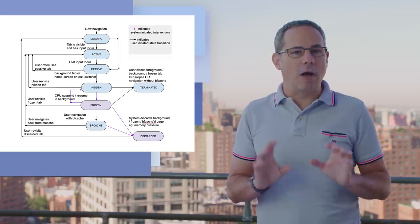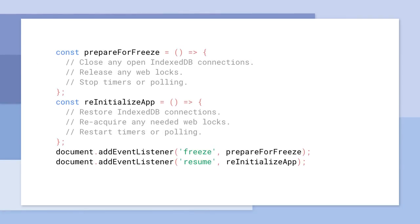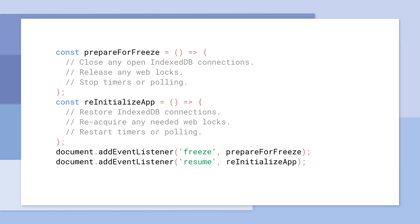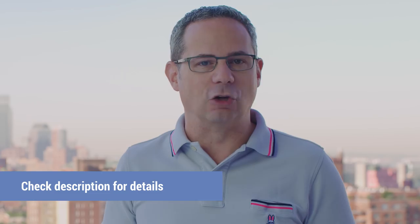With the new Page Lifecycle API, you can now listen for and respond to these events. For example, if a tab needs to be discarded to conserve memory, the browser will fire a frozen event, where you can store any necessary state. Then, when the user refocuses the tab, the resume event is fired, making it possible to restore any previous state. The spec and explainer doc are on GitHub, linked in the description.